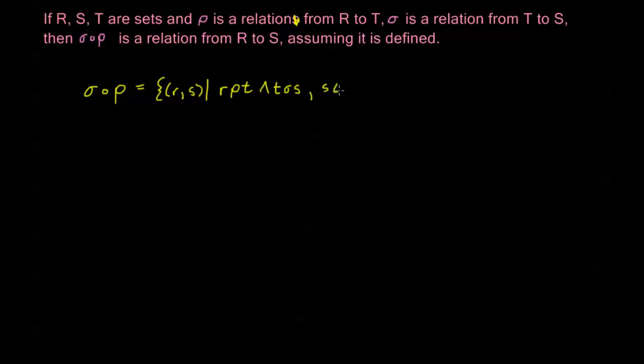Where s is in S, t is in T, and r is in R. So while the composition is defined as these ordered pairs (r,s), what's actually happening is we're going from r to t with the relationship ρ, and then from that same t, we're using that to go through σ to s, and that's connecting this r and s by this composition of relations.